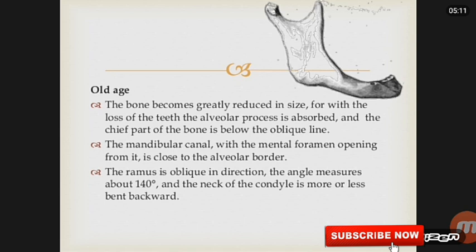The mandibular canal with the mental foramen opening from it is close to the alveolar border. The ramus is oblique in direction. The angle measures over 140 degrees, and the neck of the condyle is more or less bent backward.